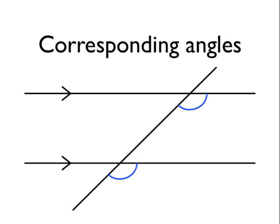So what are corresponding angles? Here's an example of a pair of corresponding angles. The two angles that I've drawn in blue here are corresponding angles. Now, a way that's normally taught for you to spot pairs of corresponding angles is to look for F shapes in the lines.